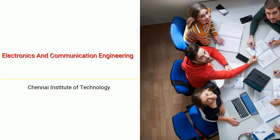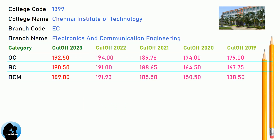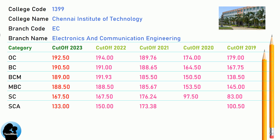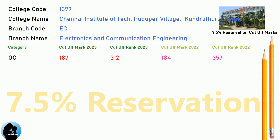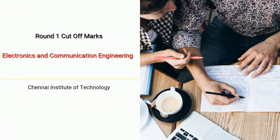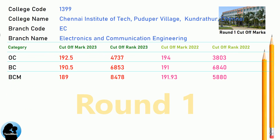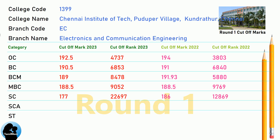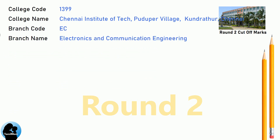DNA Cut-off for Chennai Institute of Technology in Electronics and Communication Engineering. DNA 7.5 Reservation Cut-off for Chennai Institute of Technology in Electronics and Communication Engineering. DNA Round 2 Cut-off for Chennai Institute of Technology in Electronics and Communication Engineering.